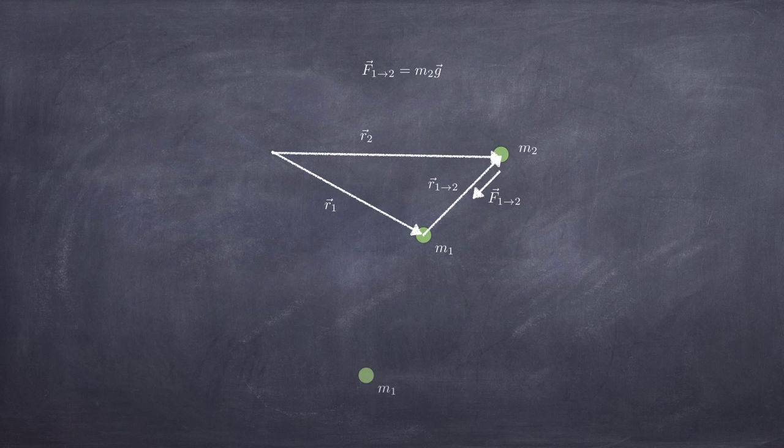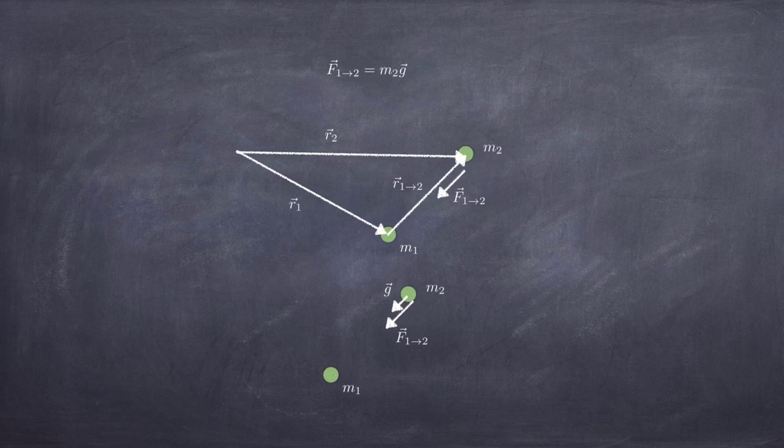So, the idea is mass 1 produces a field, G, at the location of mass 2, and mass 2 experiences a force, F12, due to the fact that it's immersed in the field produced by mass 1. That's the idea.